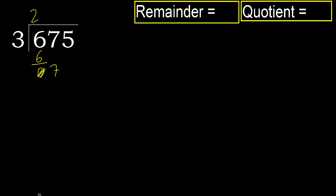Eliminate 0 on this side. 7. 3 multiplied by 3 is 9, which is greater. Multiplied by 2: 6 is not greater. Subtract. Next.